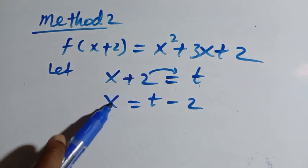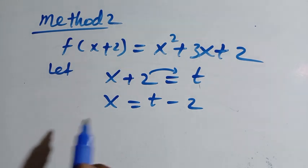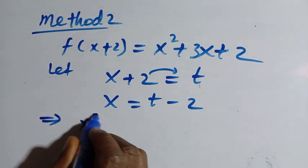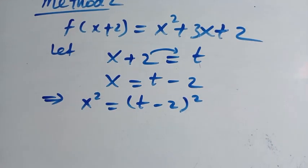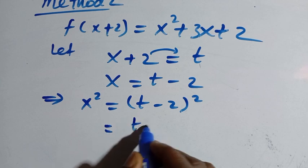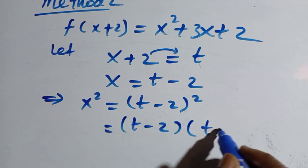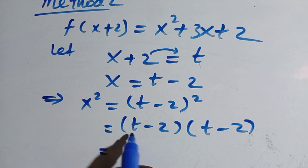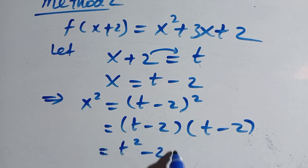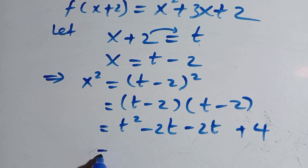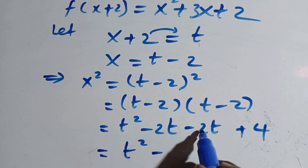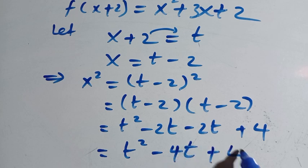So let's try to replace x squared. We have x squared, which is the same as t minus 2 squared. When we expand this: t minus 2 multiplied by t minus 2. That is t squared minus 2t minus 2t plus 4, which gives us t squared minus 4t plus 4.